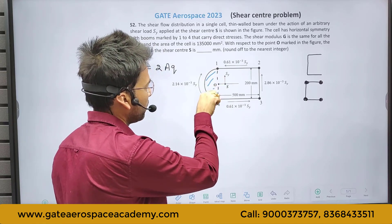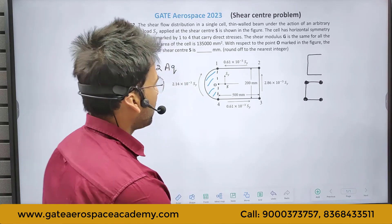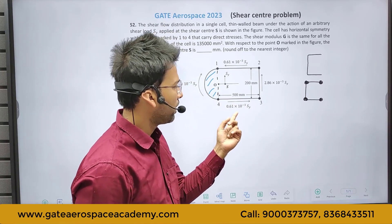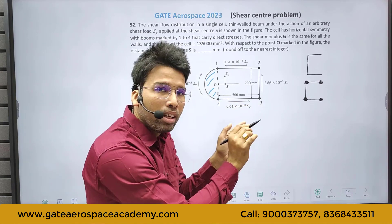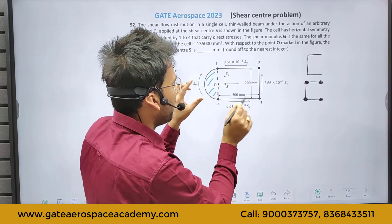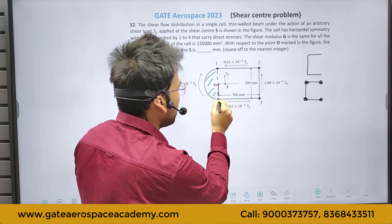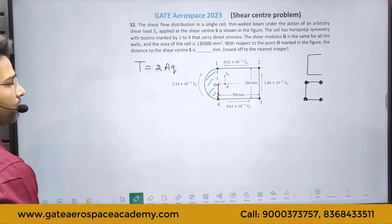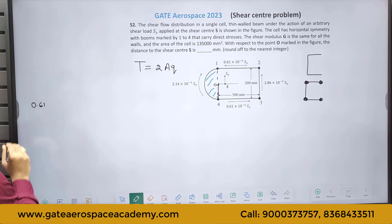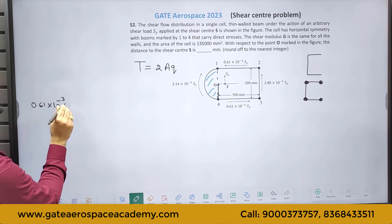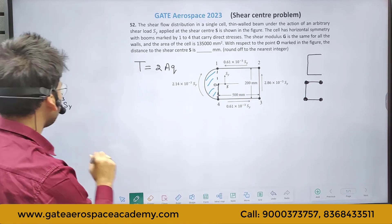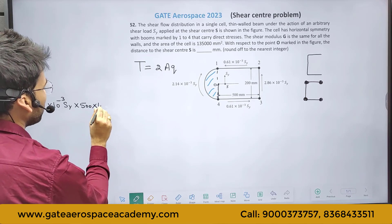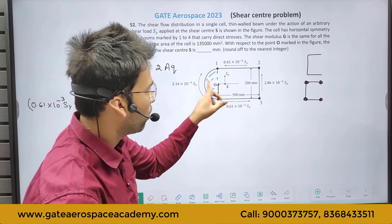The area A is the area enclosed by the curved web section and the straight line joining the booms, so we need that area. Now let's take the moment balance about point O. Starting here: 0.61 × 10⁻³ Sy into this length 500 mm — that gives a force — multiplied by moment arm of 100. This will be an anti-clockwise moment about O.